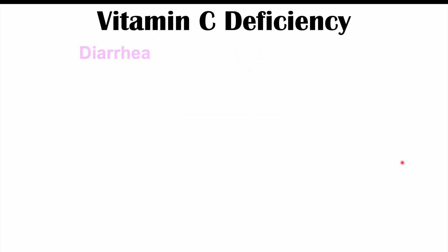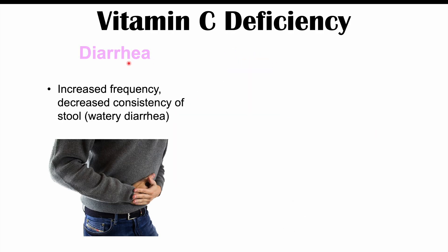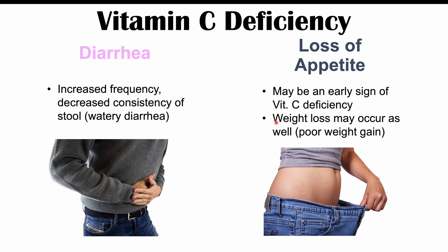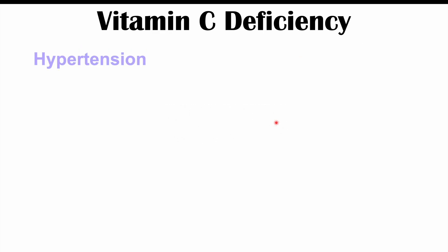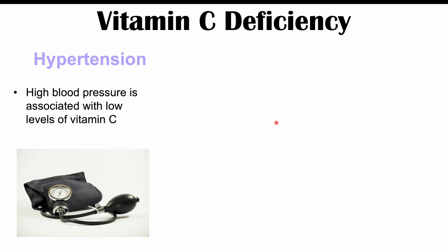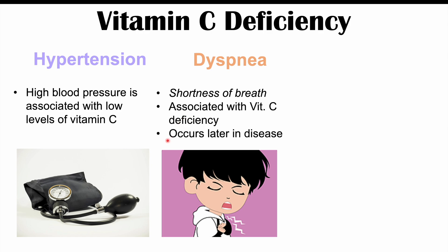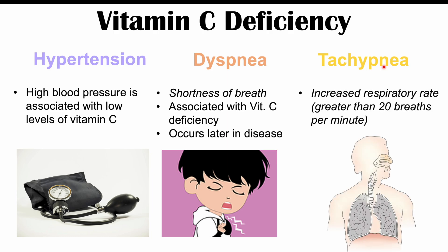There are also gastrointestinal signs and symptoms, including diarrhea — increased frequency or decreased consistency of stool — and loss of appetite, which can actually be an early sign of vitamin C deficiency. Weight loss or poor weight gain may also occur. Other signs and symptoms include hypertension — high blood pressure — associated with low levels of vitamin C; dyspnea, which is shortness of breath occurring later in disease; and tachypnea — an increased respiratory rate greater than 20 breaths per minute.